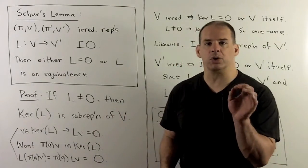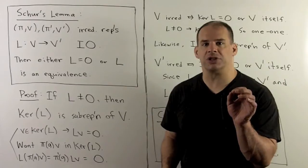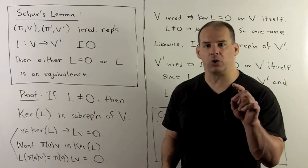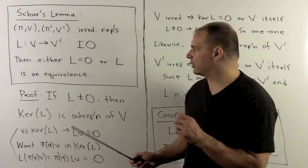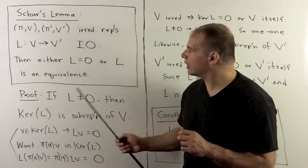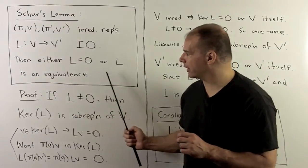So when we have irreducible representations, there's no middle ground — it's either nothing or everything.